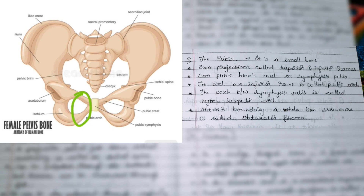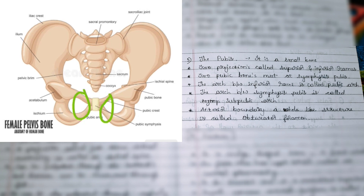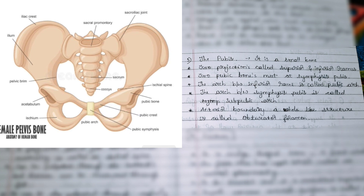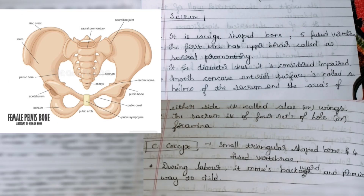In the innominate bone, the smallest bone is known as the pubis. In the pubis there are two projections: the upper projection is known as the superior ramus and the lower projection is known as the inferior ramus. The two pubic bones meet at a point known as the pubic symphysis. From the anterior view you can also see a hole here called the obturator foramen.